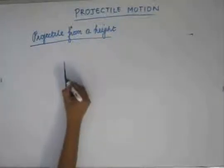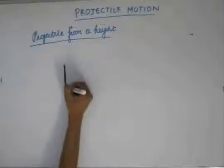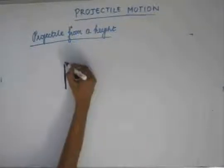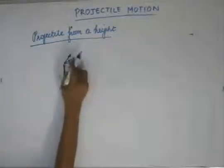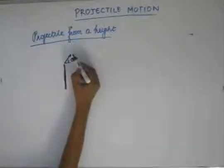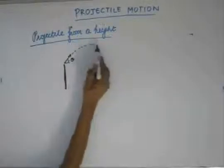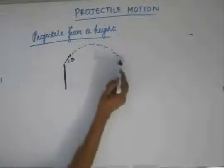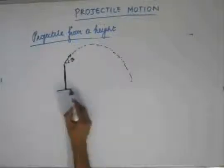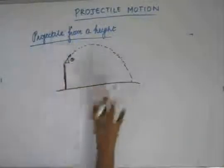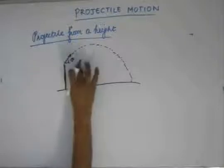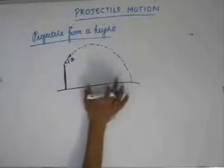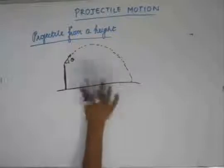Suppose we have this height and the projectile has been projected making an angle θ with the horizontal direction. The particle will follow a certain path and finally it will drop here. This is the horizontal surface. Here also we will choose two perpendicular directions and independently solve the equations of motion in both directions.